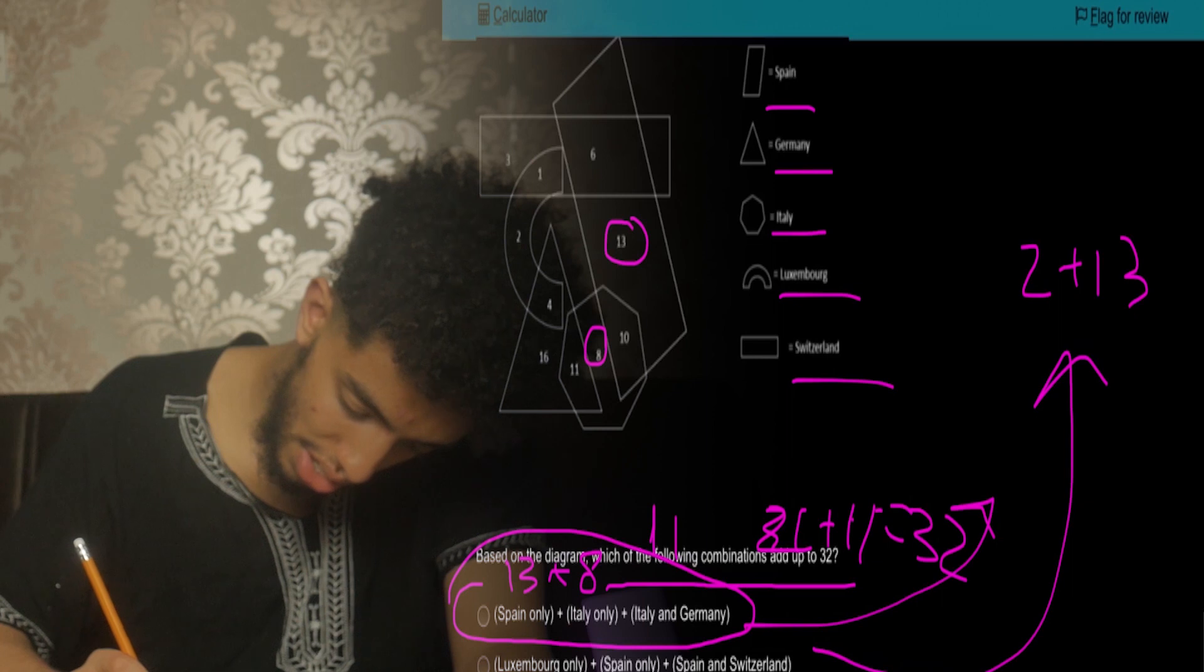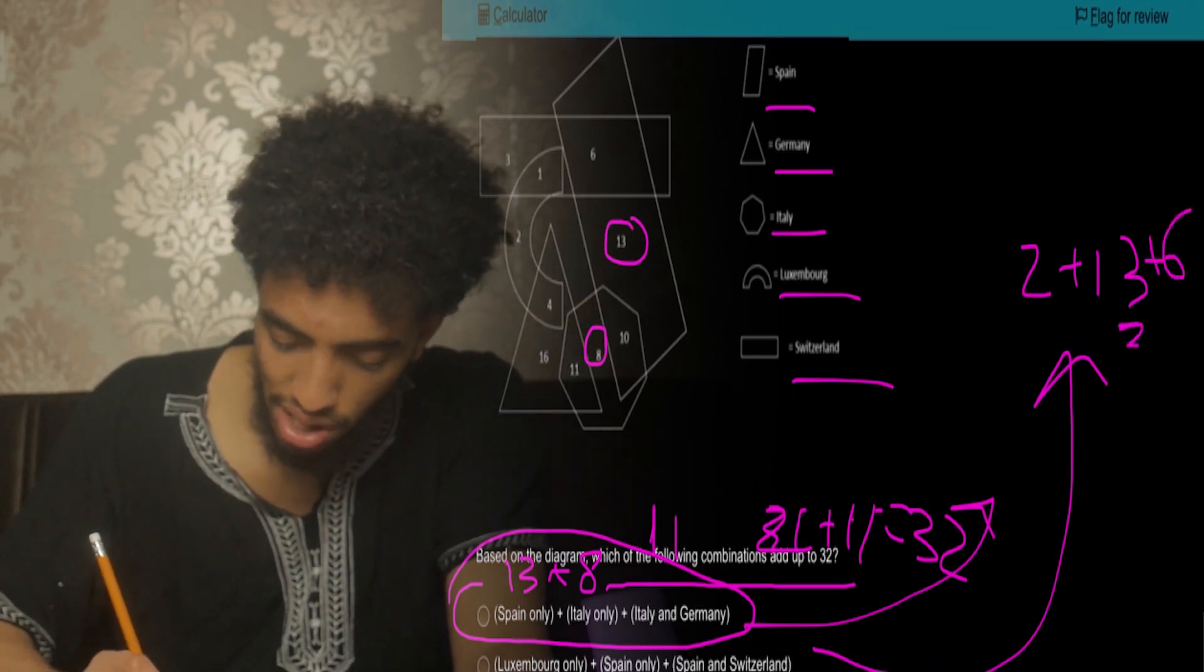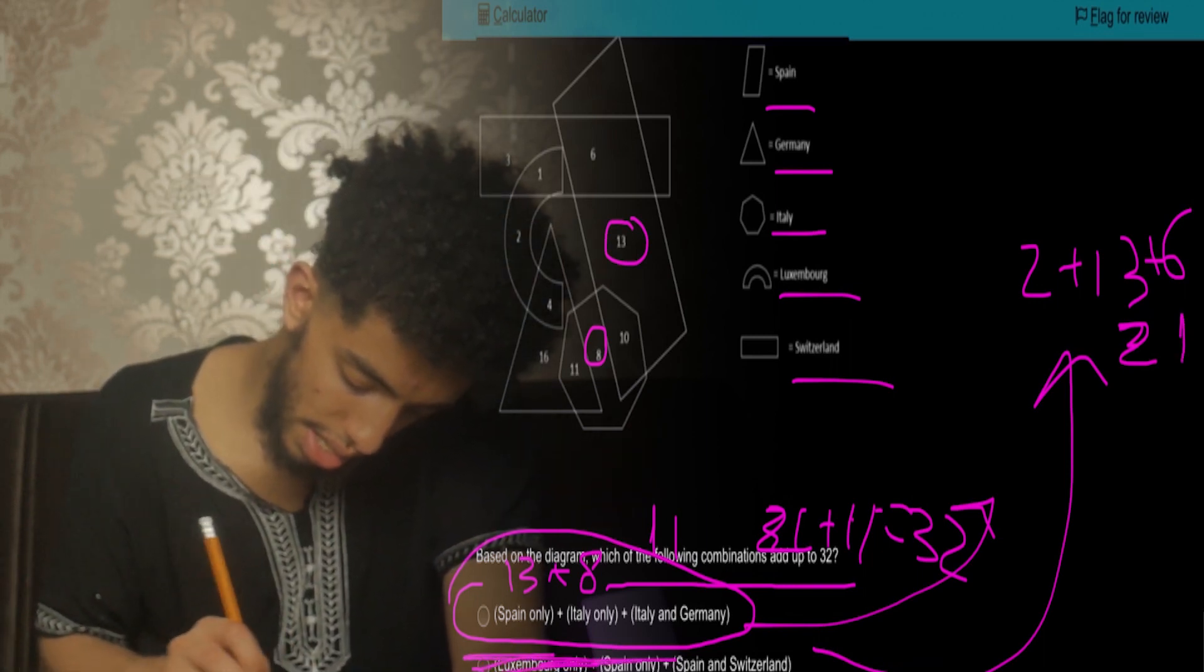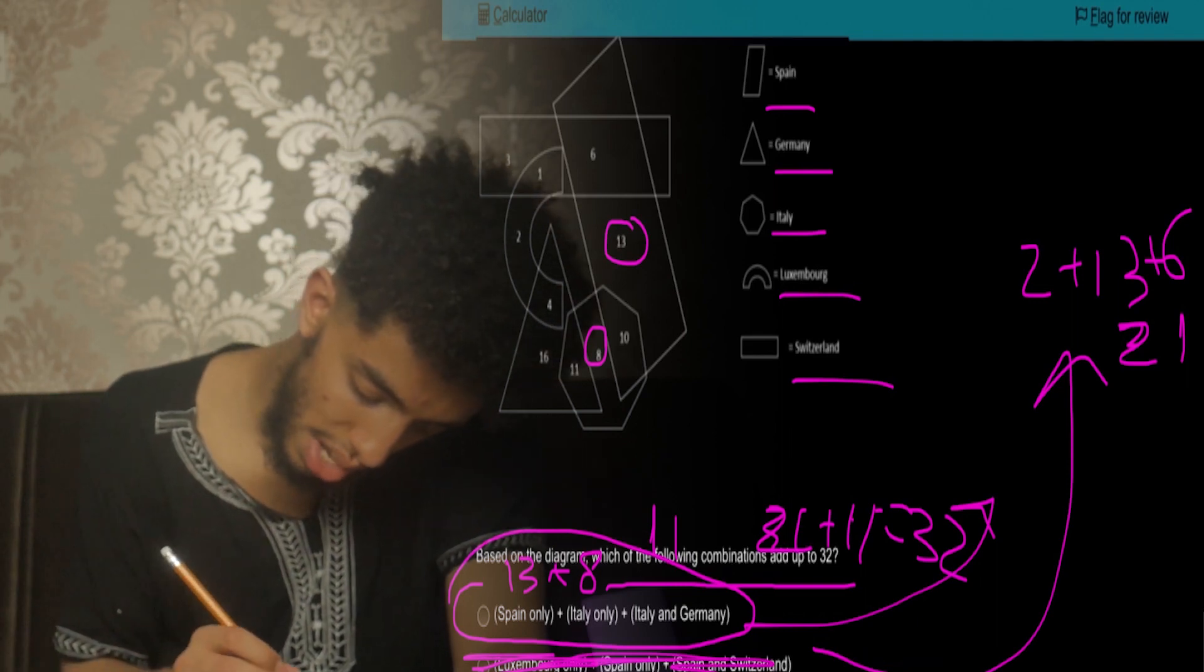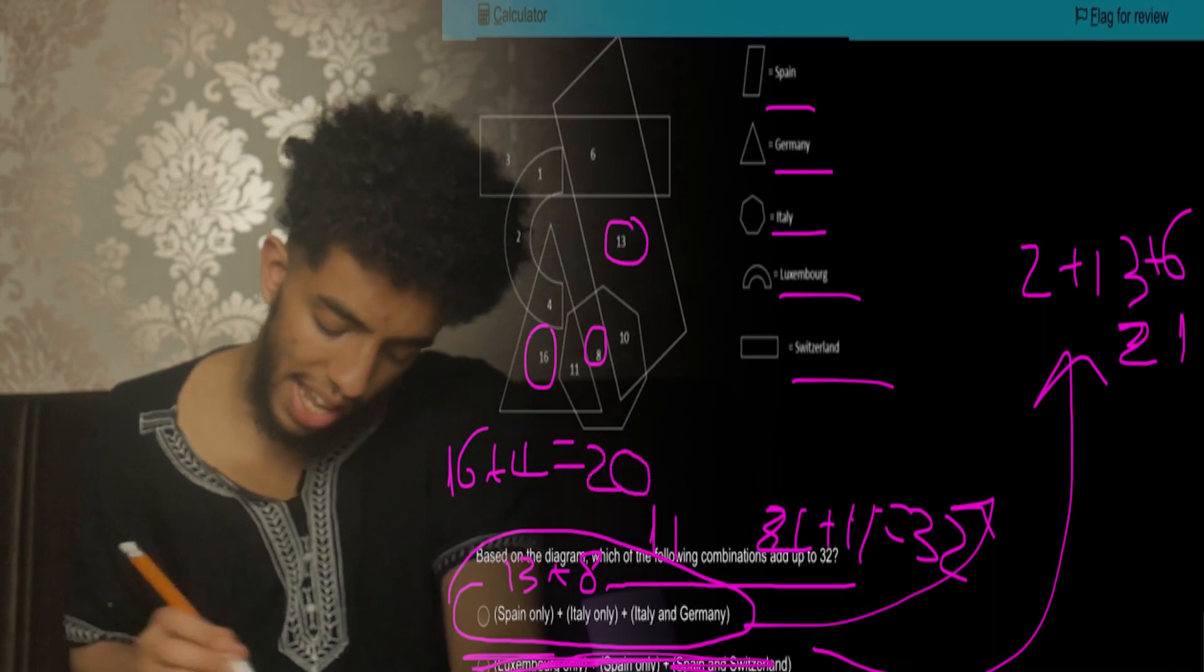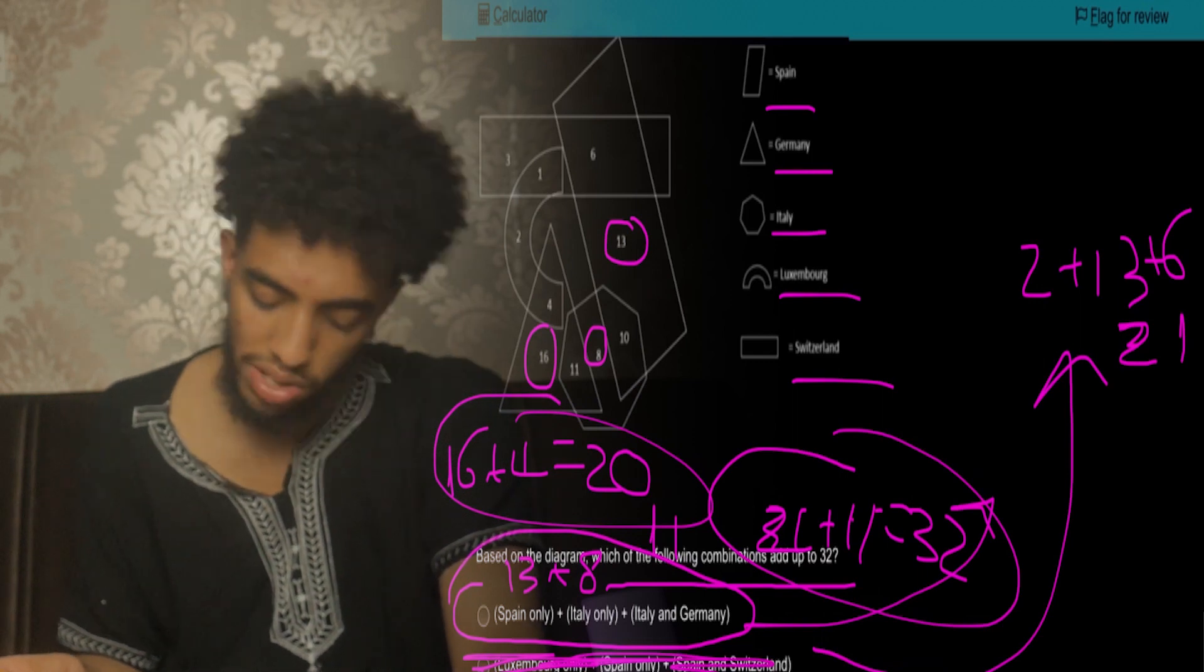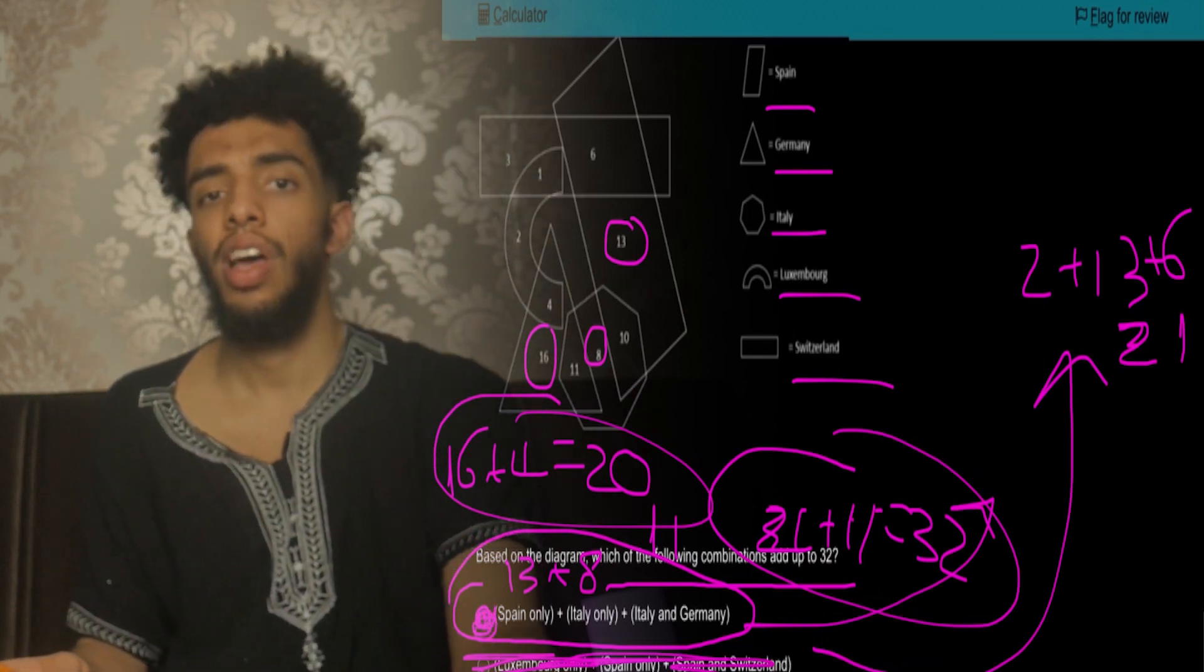Germany only and Germany in Luxembourg. Germany is a triangle, that's 16, and Germany in Luxembourg, Germany sharing it with Luxembourg, for a total equal to 20. Now we can see that the only ones that have anything close to 32 is the first one. Hence we stick with the right answer, and I hope that's explained it to you.